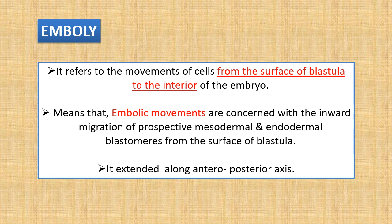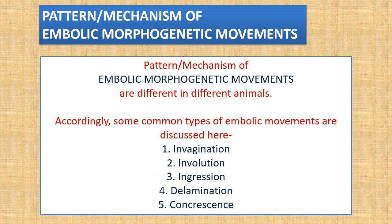Embolic movements are concerned with the inward migration of prospective mesodermal and endodermal blastomeres from the surface of blastula to the interior of the embryo, extended along the anterior-posterior axis. The difference between epibolic and embolic: in epibolic, cells spread over the embryo and form prospective ectoderm, while in embolic, cells move to the interior of the embryo to form prospective mesoderm and endoderm.